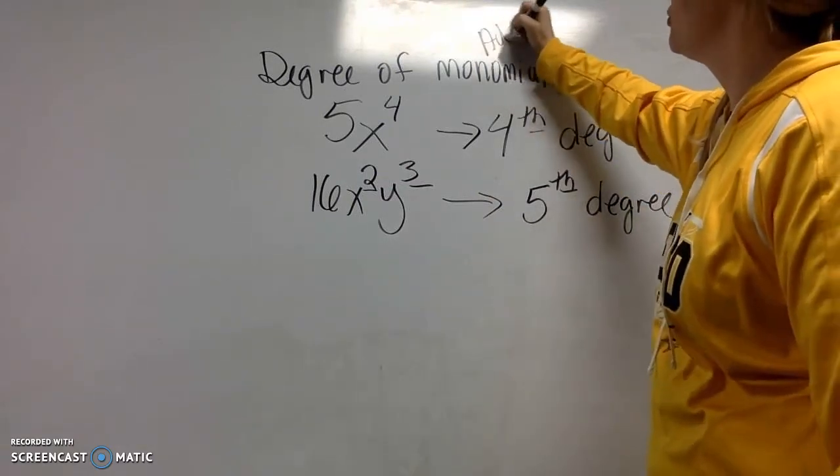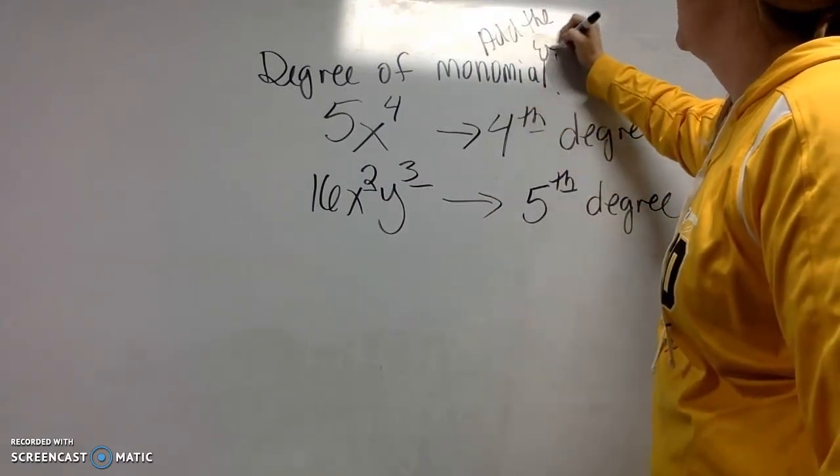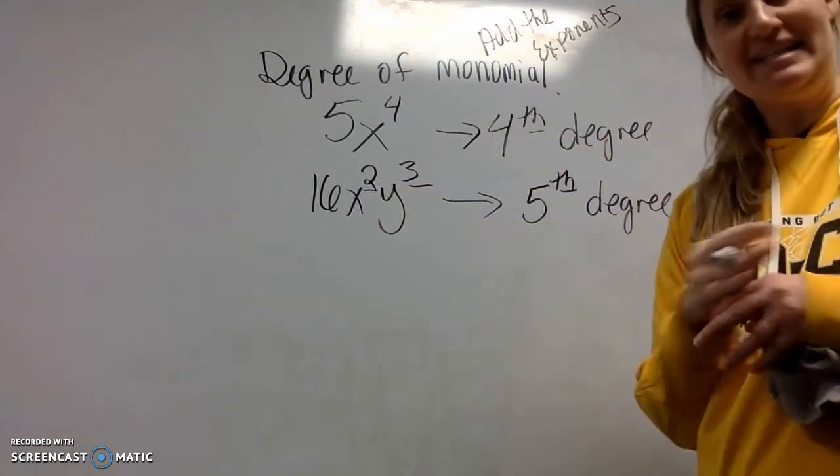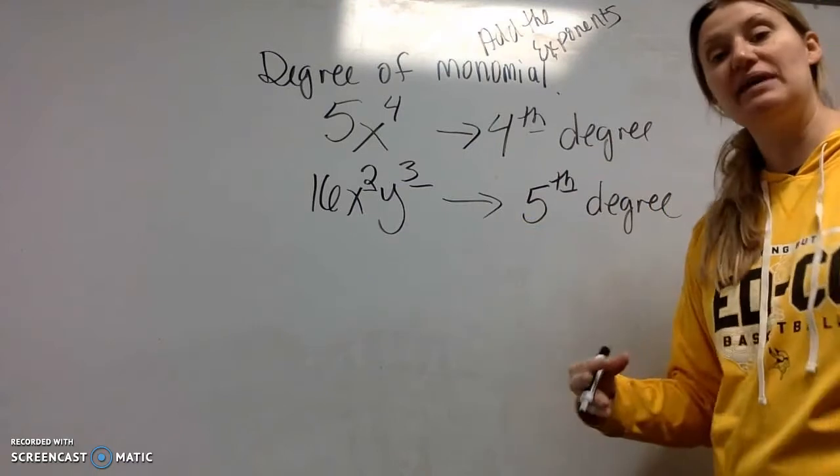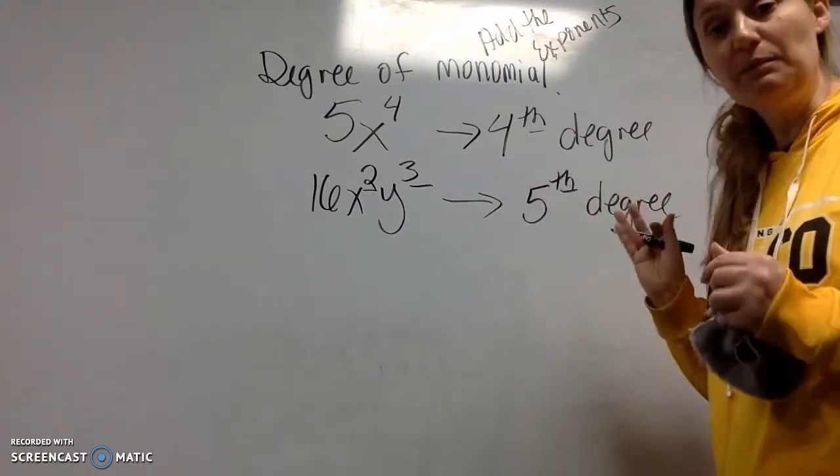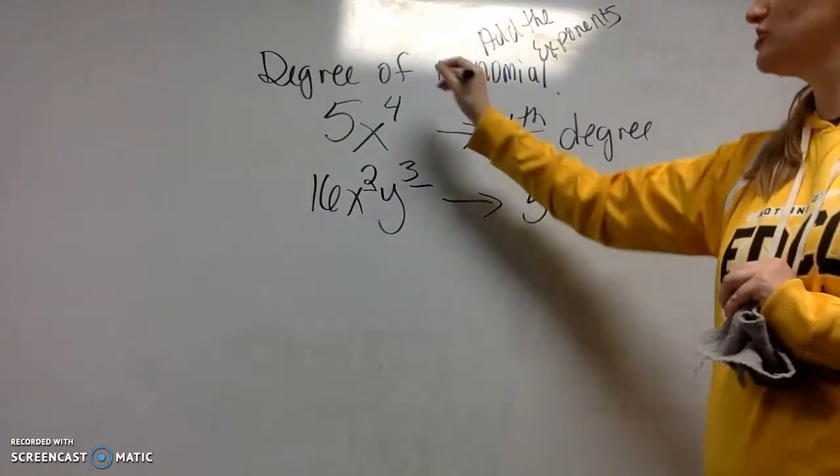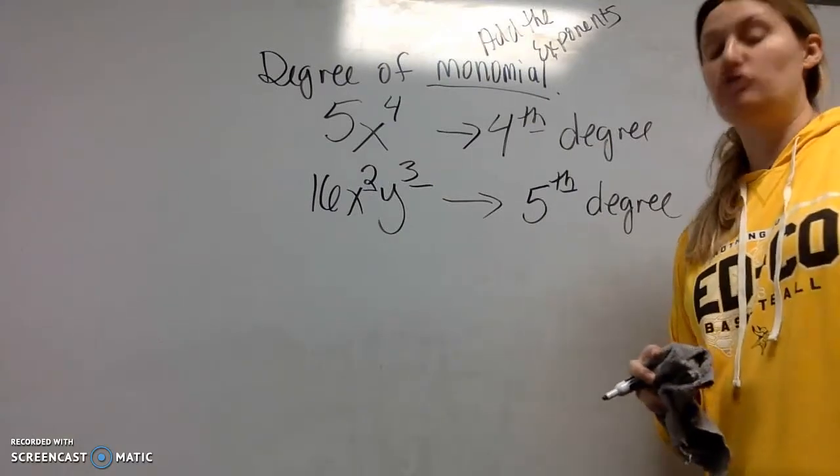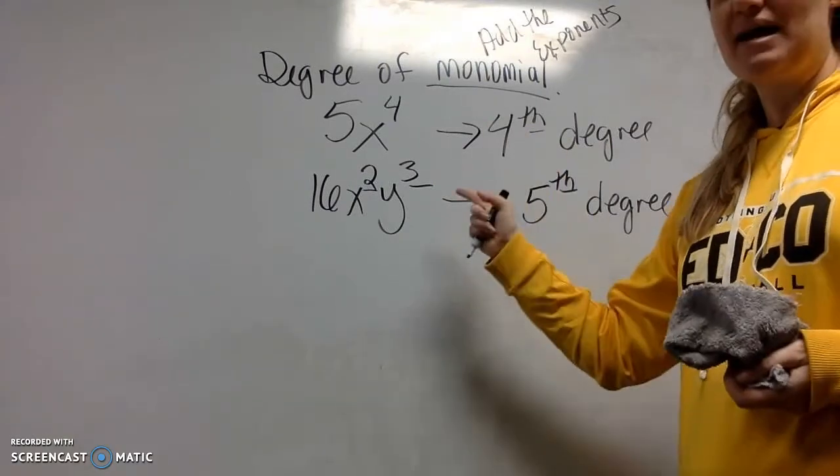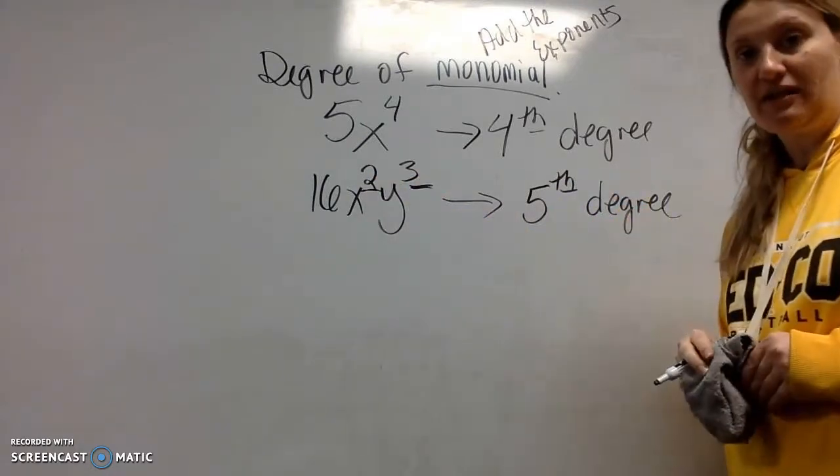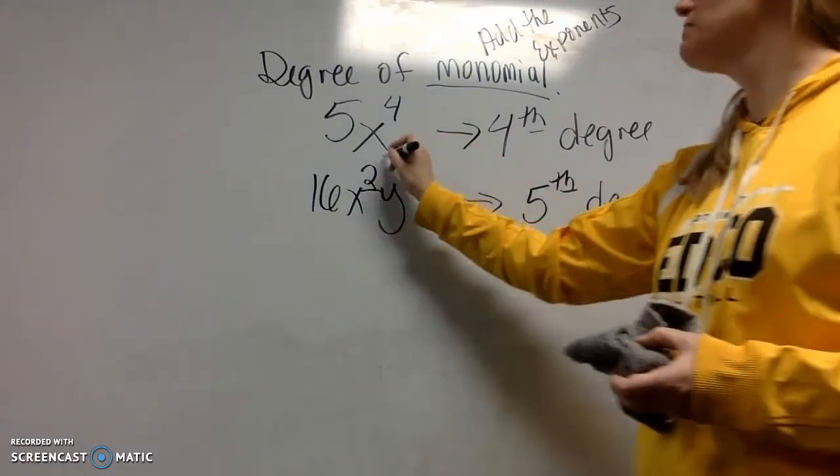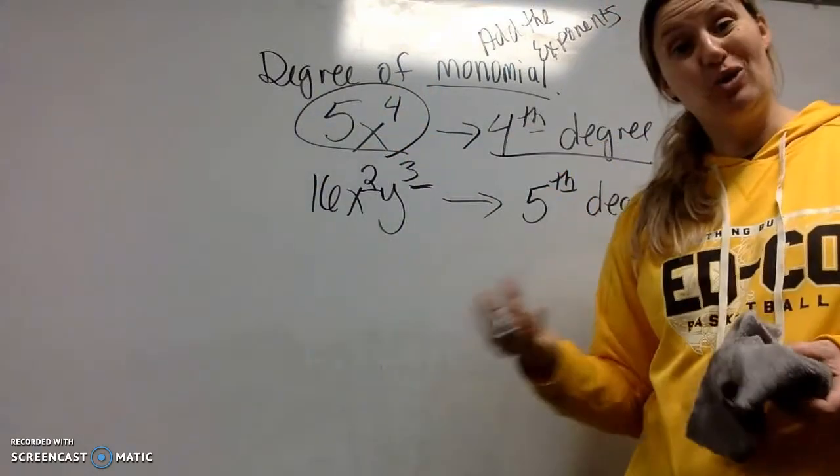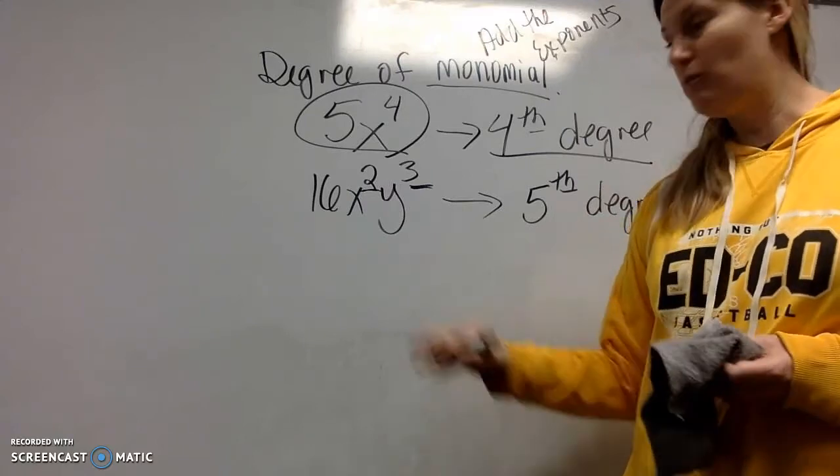So this is considered a fifth degree. So we are going to add the exponents, even if they are different bases. This is not the property of keep the base, add the exponents. We're not simplifying. We're just saying the degree. And this goes only for monomials. Any other polynomial, you just give me the biggest exponent. Monomials are the only ones that we add the exponents together. Now, the good news is most monomials only have one variable, and so we find the degree just like we would any other polynomial.